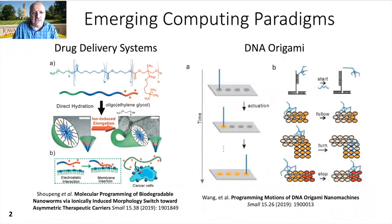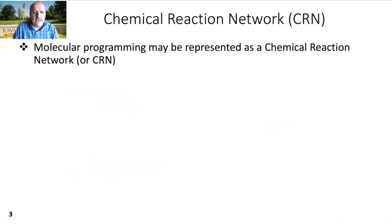Molecular programming is one of many emerging computing paradigms. Intelligent drug delivery and DNA origami are two examples of molecular programming. Drugs are used as part of nanomachines which can make decisions, targeting specific parts of the cell, and actually building intelligence into drugs. In DNA origami, nanomachines are activated on specific inputs to perform various movement and functions. Molecular programming may be represented as a distributed set of chemical reactions, which is called a chemical reaction network or CRN.